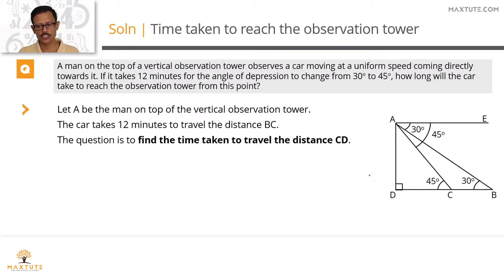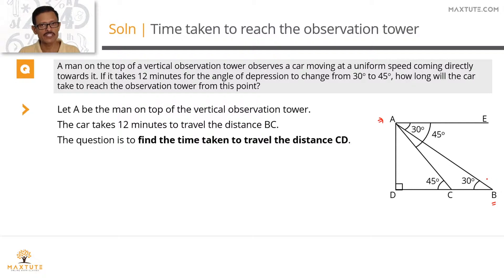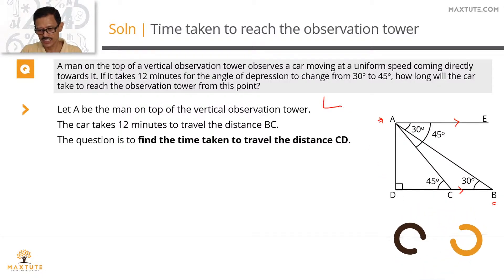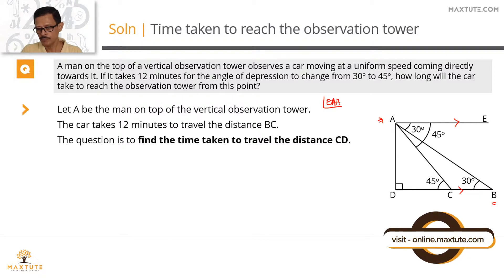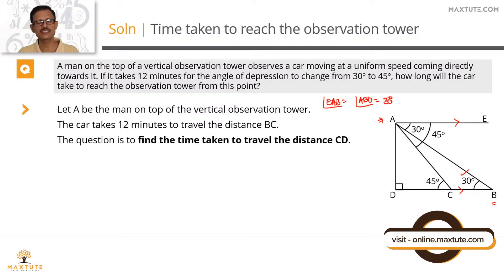AD is the observation tower. The man is observing the car from point A. The car is initially at point B, where the angle of depression is 30 degrees. Angle EAB equals 30 degrees. Since AE is parallel to the ground BCD, interior alternate angles are equal, so angle EAB equals angle ABD, both equal to 30 degrees.